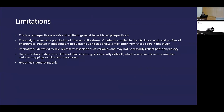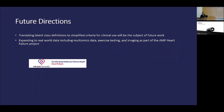Limitations include this being a secondary retrospective analysis that assumes any future population of interest is similar to those enrolled in the 19 clinical trials, which may not be the case. These phenotypes represent associations of variables and may not reflect any sort of pathophysiology, and harmonizing data from multiple trials into a single dataset is inherently difficult. These are hypothesis-generating findings only. Future directions include translating these definitions into simplified criteria for clinical use and expanding into real-world data including multi-omics data as part of the AMP Heart Failure Study. Thank you to Dr. Kaye.